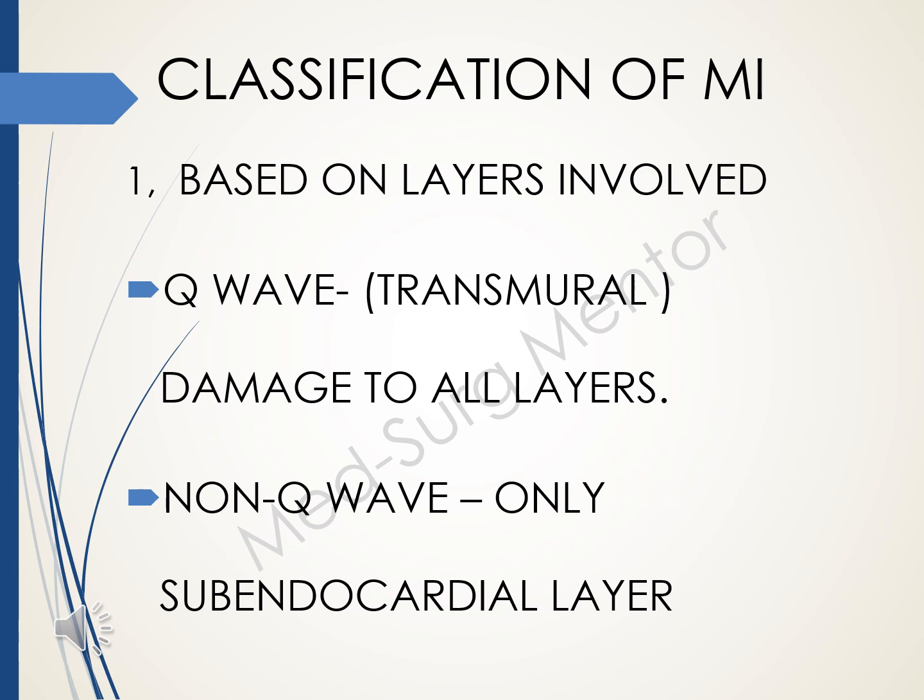The first classification of MI is based on the layers involved and is categorized into two types. The first is Q-wave or transmural myocardial infarction, meaning there is extensive damage to all layers of the myocardium. The second is non-Q-wave myocardial infarction, which means only the sub-endocardial layer is affected.